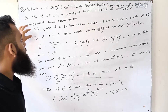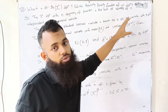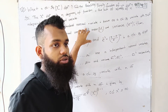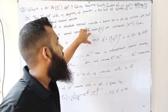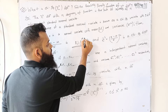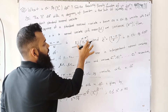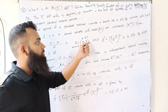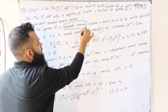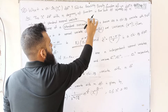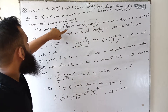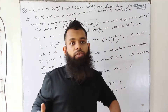The square of a standard normal variate is known as a Chi-square variate with one degree of freedom. That is, a standard normal variate squared gives a Chi-square variate with one degree of freedom.